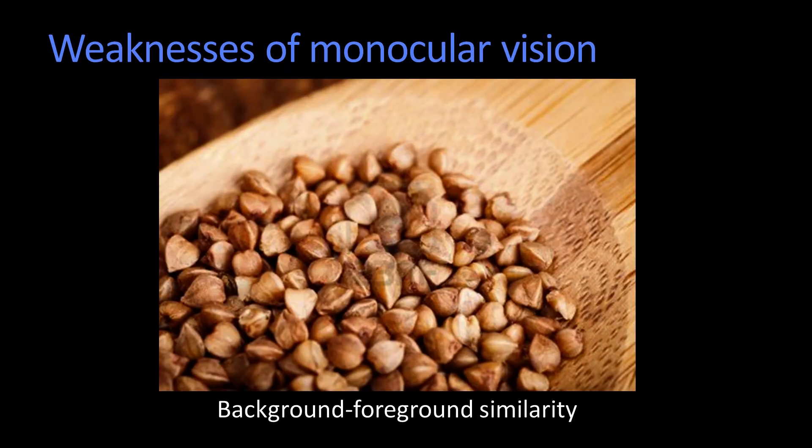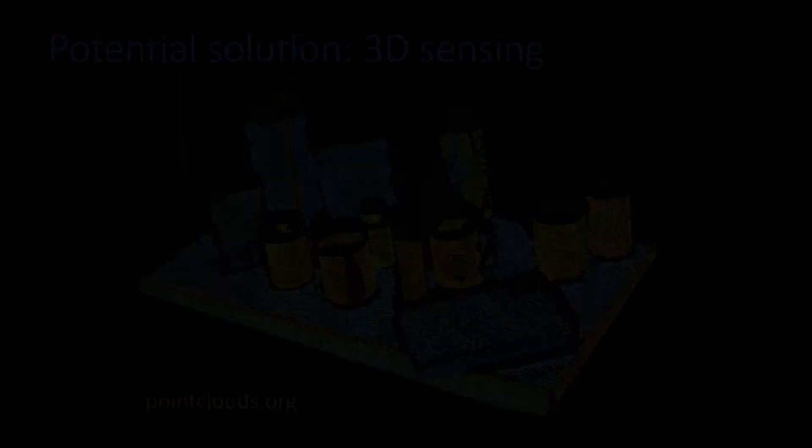We also have trouble that color is not all that discriminative sometimes of what's there. There's a similarity between the foreground and the background. What we'd really like is some representation, something that gave us the shape directly, so that we would see something that looks like this.